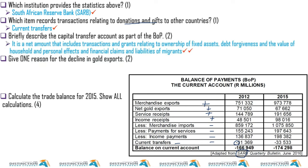Briefly describe the capital transfer account. It's always a net figure. It includes transactions and grants relating to the ownership of fixed assets, debt forgiveness, and the value of households' personal effects, as well as financial claims and liabilities of migrants. Because it's a net figure, you don't need to worry about calculating it yourself.